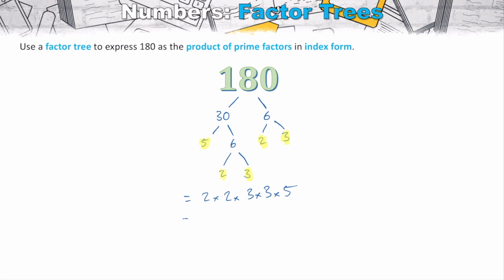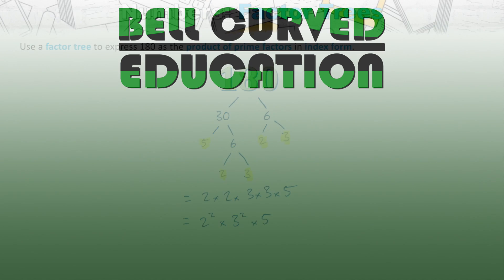We've found the same prime factors: 2 × 2 × 3 × 3 × 5, which is 2² × 3² × 5. The key point is that even if you don't start with the smallest prime, as long as you keep dividing composite numbers into smaller factors and check that each branch ends in a prime, you'll find all the prime factors. That's how we use factor trees to break numbers down into products of primes.